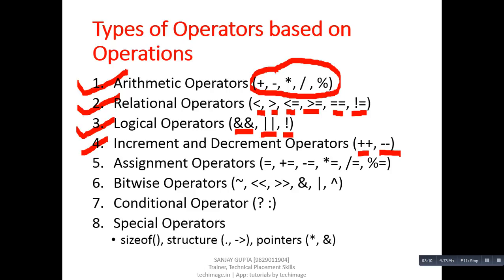The fifth is assignment operators. In this category, we have: equals to, plus equals to, minus equals to, multiply equals to, divide equals to, and modulus equals to. As the name suggests, assignment means to assign the values of right-hand side expressions into left-hand side variables.